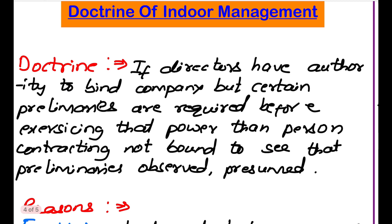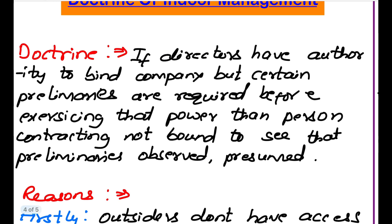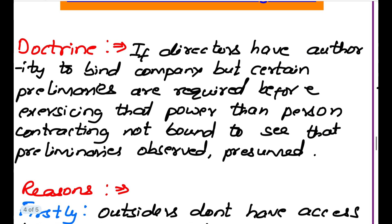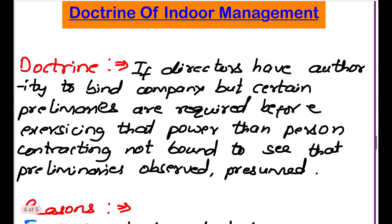What is the Doctrine of Indoor Management? If directors have authority to bind the company but certain preliminaries are required before exercising that power, the person contracting is not required to verify that those preliminaries have been performed. It is presumed that the director has already performed all the obligations. So if a director can enter into a contract but must first perform certain internal office tasks, the outsider can presume that he has performed those tasks before exercising his power.